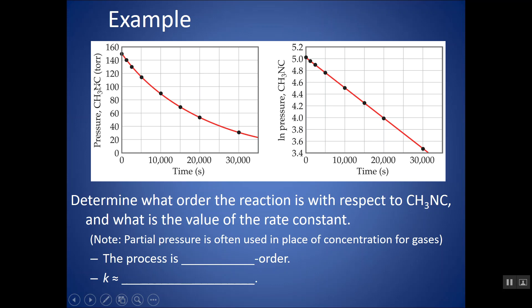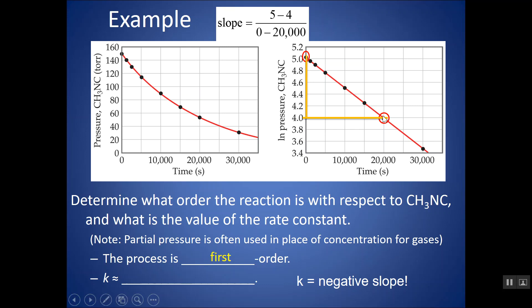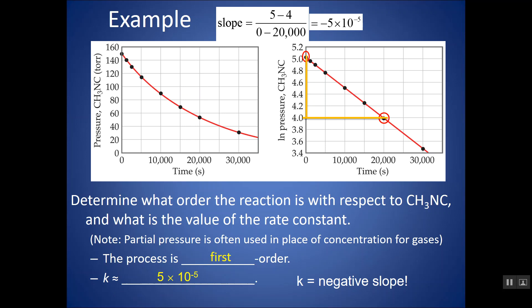For gases, sometimes rather than concentration versus time, you might see pressure versus time and natural log of pressure versus time, and you can still use the same technique. Here, natural log versus time gives my straight line, so it's going to be first-order. And then if they ask me for the rate constant, I can essentially pick two points that fall on my best fit curve and find the rise over run. In this case, my rise is going 5 to 4, my run is going 0 to 20,000, and I get as my slope — it's a negative slope, so we'll change it to be positive — 5 times 10 to the negative 5th. And don't forget, I need units for the rate constant: if this is first-order, then my units should be s⁻¹.